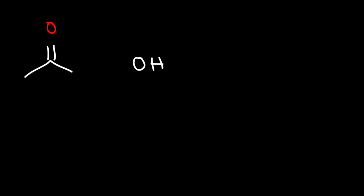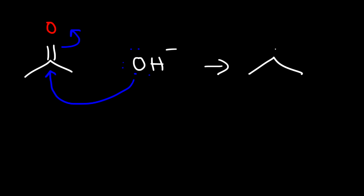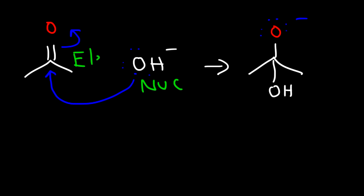For example, let's say if we reacted a ketone with a nucleophile such as hydroxide. Hydroxide can donate one of its lone pairs, causing the pi bond to break, giving us a tetrahedral intermediate. So in that one step, hydroxide acted as the nucleophile and the carbon atom of the ketone acted as the electrophile.